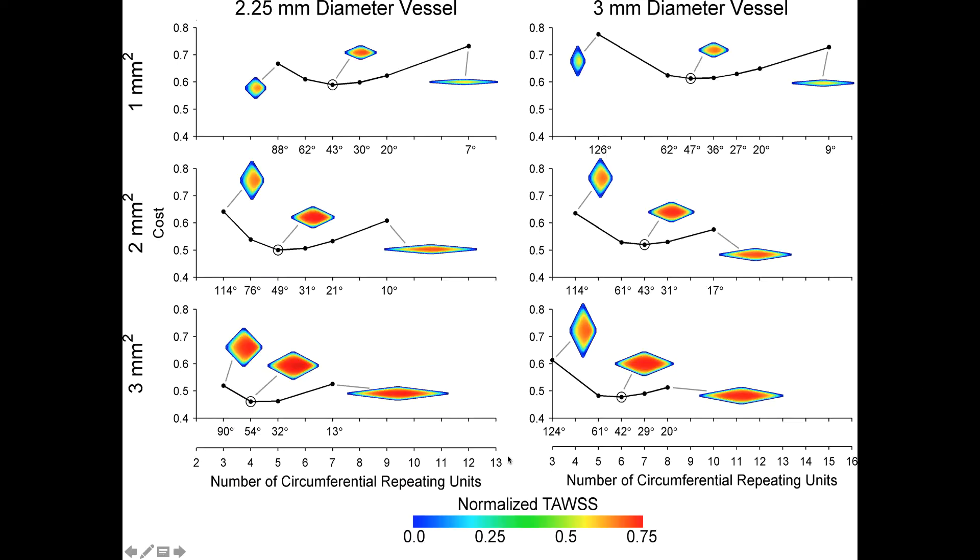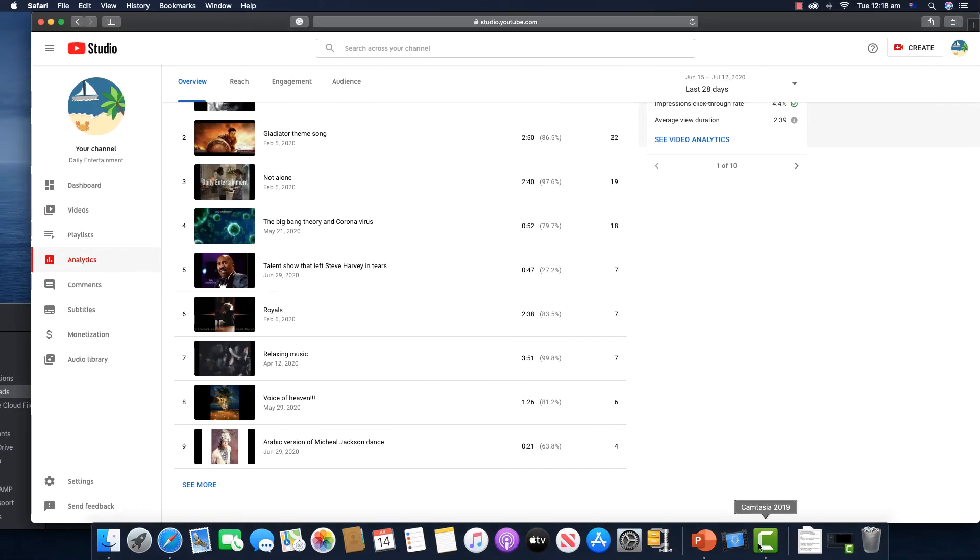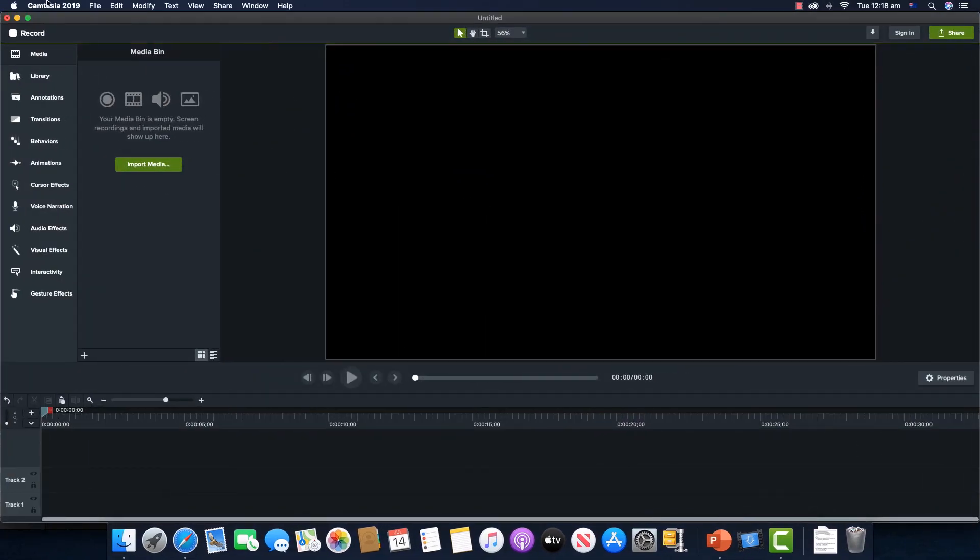According to this simulation, we can clearly understand and see that the best structure to develop an optimal cardiac stent is using one millimeter and three millimeter diameter vessels. Thanks for paying attention to this lecture.